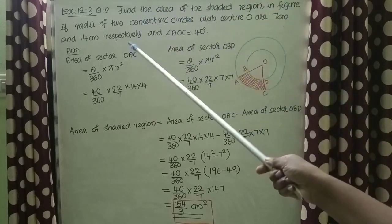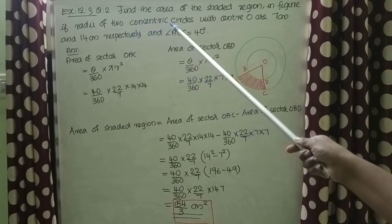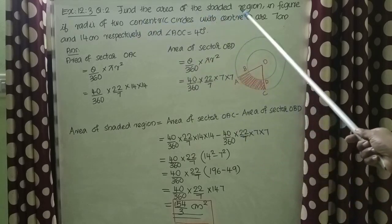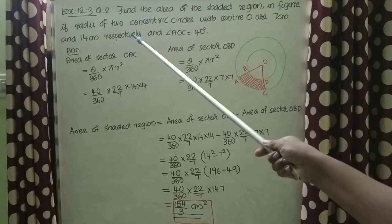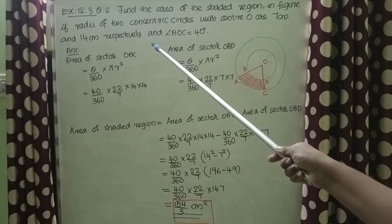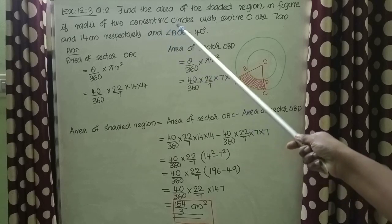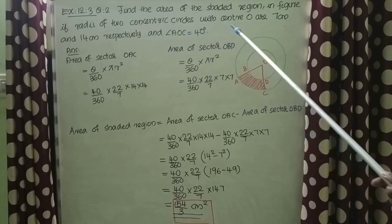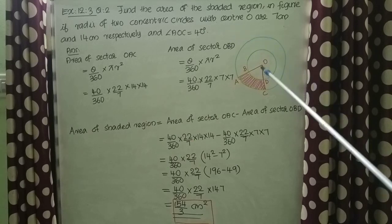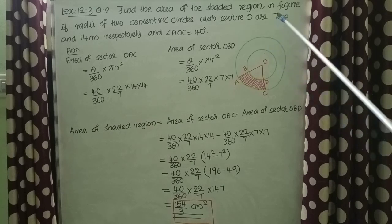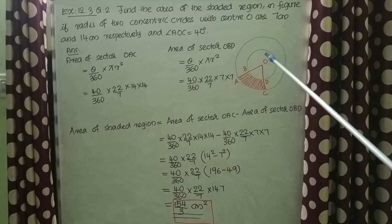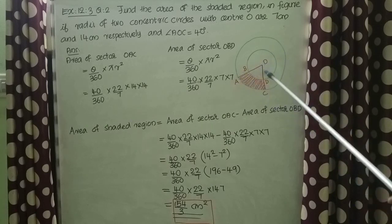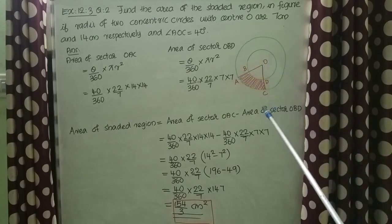In the figure, if radii of two concentric circles with center O are 7 cm and 14 cm respectively, and angle AOC is equal to 40 degrees. Here, two concentric circles are given with radii 7 cm and 14 cm, and angle AOC is 40 degrees.